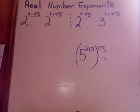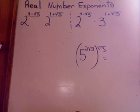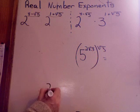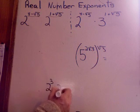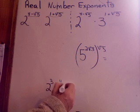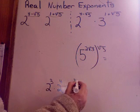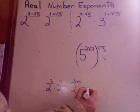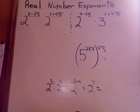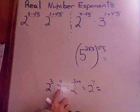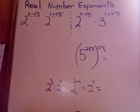I'd like to do some problems with real number exponents. Hopefully you remember how to work with exponents. Just a brief reminder: if you have 2 to the 3rd times 2 to the 4th, what do you do? You add exponents — 2 to the 3 plus 4, which is 2 to the 7th. So when you have numbers multiplied by each other, as long as the bases are the same, you can add the exponents.